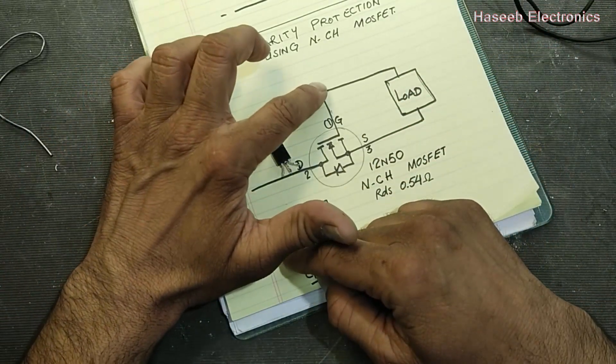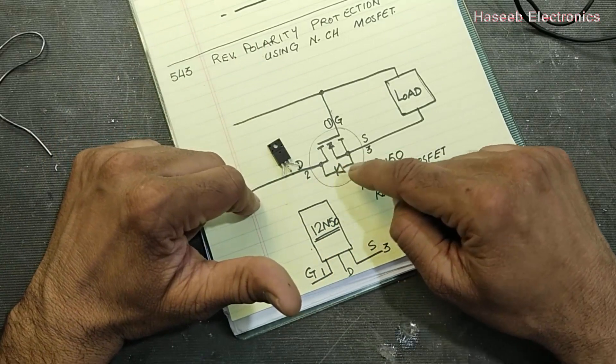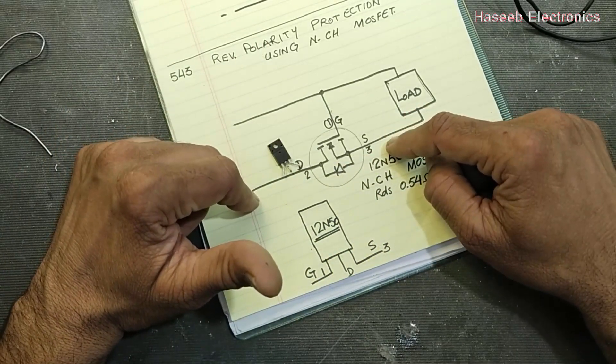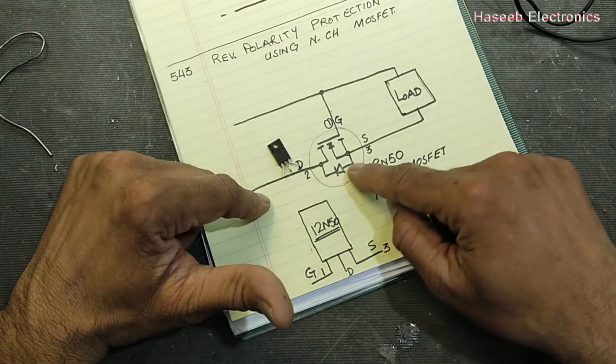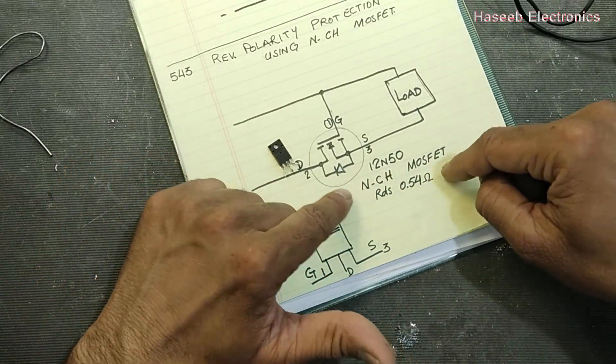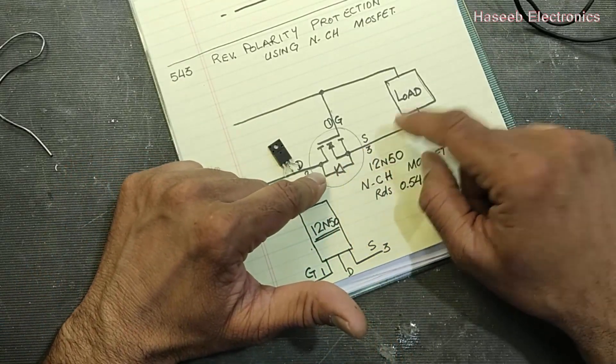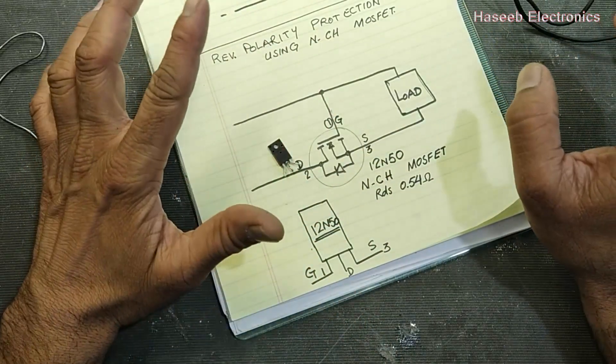P-channel MOSFET is used in the positive line, N-channel MOSFET is used in the negative line. Both will work the same, just N-channel MOSFET will control the negative line, P-channel will control the positive line.